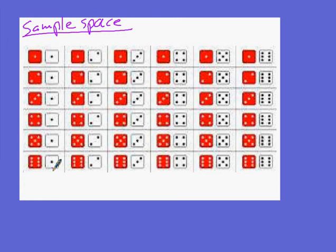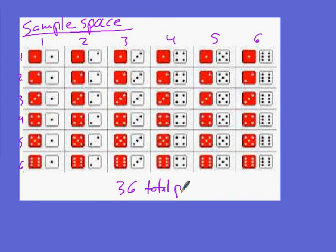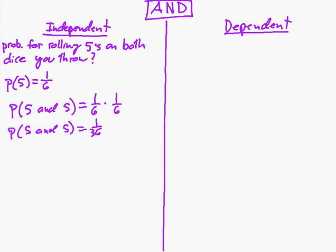The quality isn't great, but you can see this is our sample space — all possible outcomes. The first die can be one through six, and the second die also goes from one through six, giving us six rows and six columns. Each one is a different combination, so there are thirty-six total possible outcomes. And two fives happens only once out of all possible combinations, so you can see where one out of thirty-six comes from.